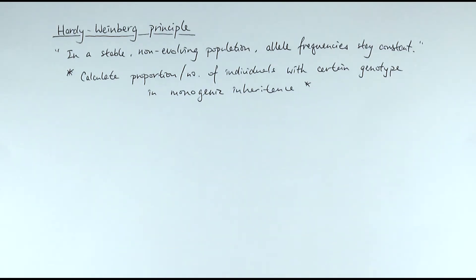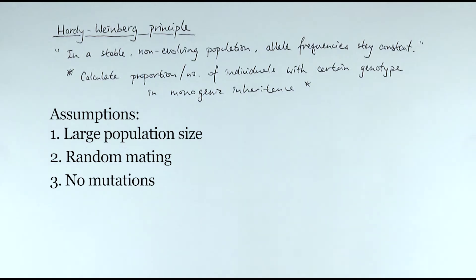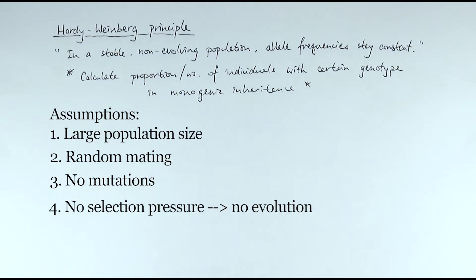In reality, there are loads of assumptions that we have to apply when it comes to the Hardy-Weinberg principle, which is a very commonly asked question. The assumptions include that the population is quite large, there is random mating so there's a completely random mix of alleles, there are no mutations happening whatsoever, and there is no selection pressure, meaning no evolution. A very common question would be asking under what situations would the Hardy-Weinberg principle not be applied — the correct answer is any changes that disrupt the genetic equilibrium.